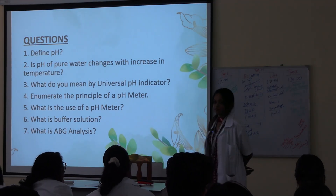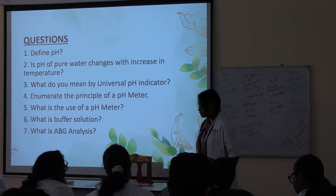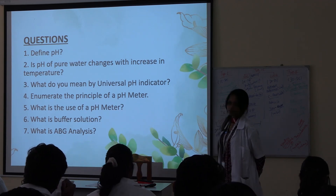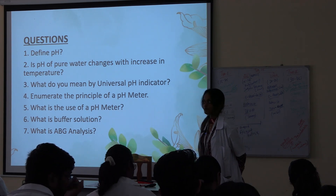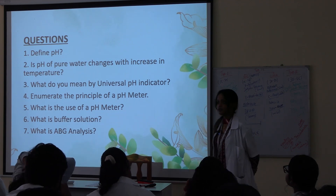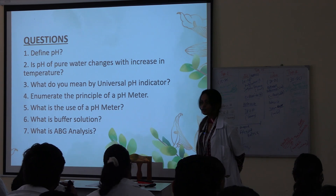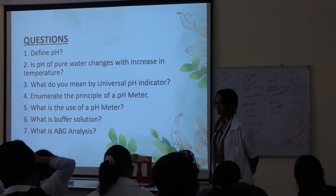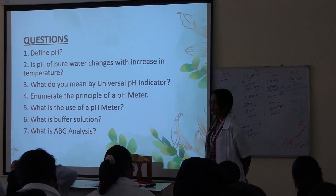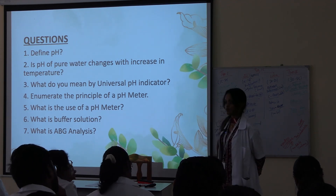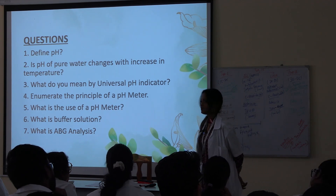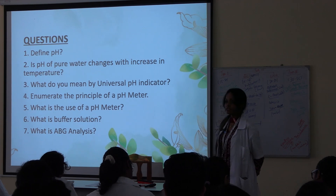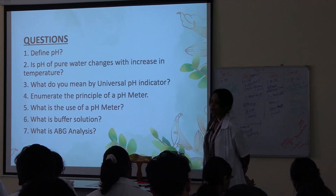Define pH: concentration of H plus ions in a solution. Does the pH of pure water change with increase in temperature? Yes — with increased temperature there is more dissociation of the molecule, so there will be more H plus ions, making the solution more acidic. For example, water at 25 degrees Celsius has a pH of 7, but at 30 degrees Celsius the pH of water is 6.92. If temperature decreases, the solution becomes more alkaline because of more presence of hydroxyl ions.